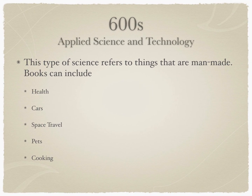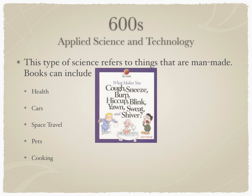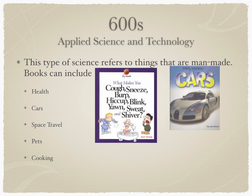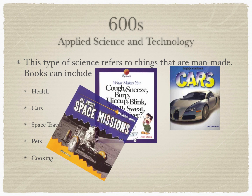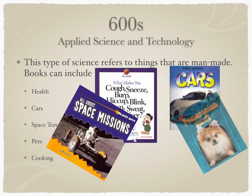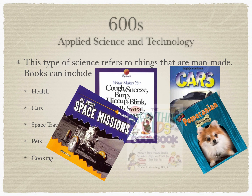Six Hundreds: Applied Science and Technology. This type of science refers to things that are man-made. Books can include Health, Cars, Space Travel, Pets, and Cooking.